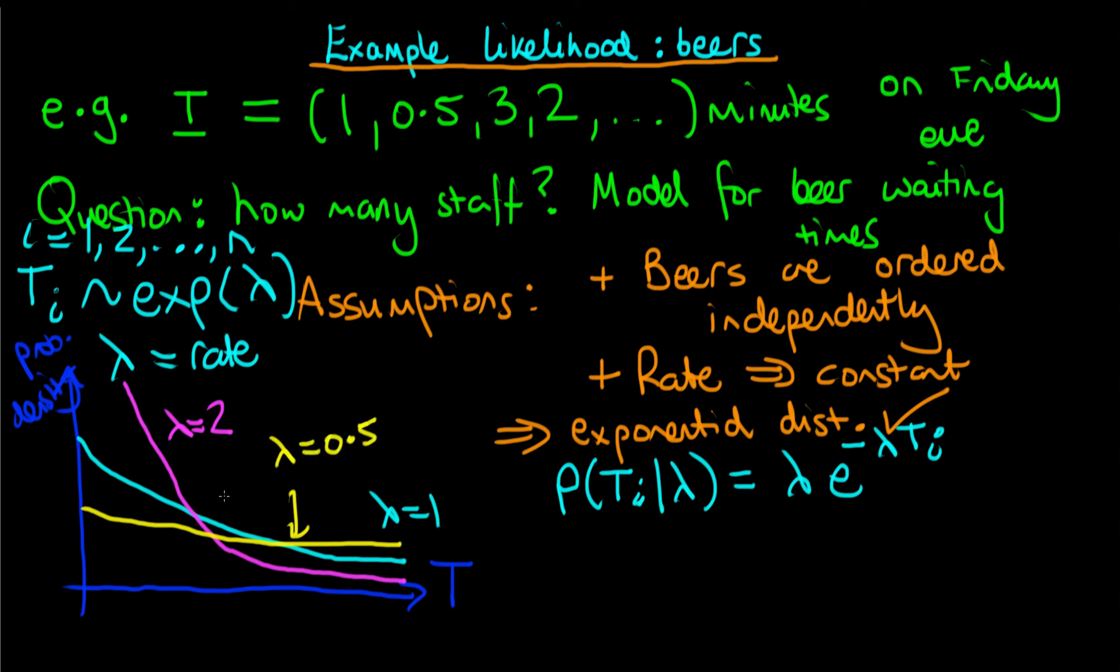Where lambda equals a half really means that a beer on average is being ordered every two minutes. So what are the properties of this distribution? Well, the idea is that we could work out the mean waiting time. So this would be the expected value of ti conditional on lambda. Assuming that we know lambda, you actually find that the mean waiting time is equal to 1 over lambda, and that makes perfect sense because, for example,